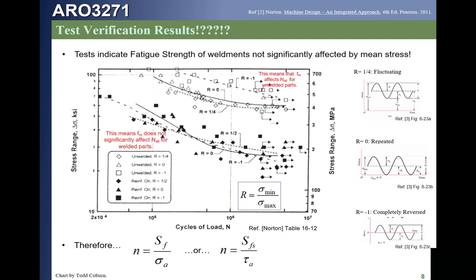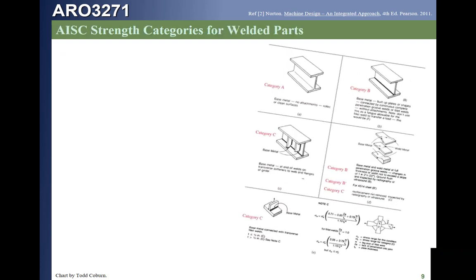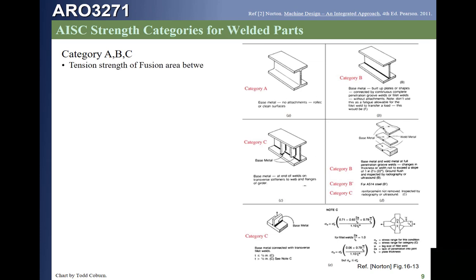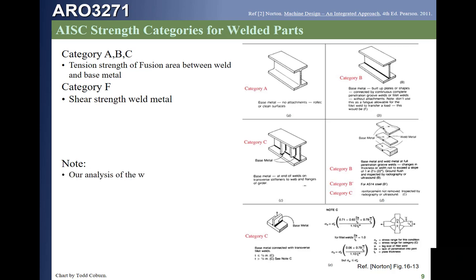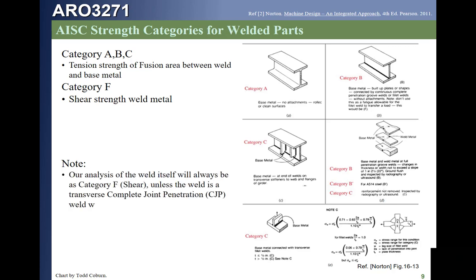We can write the factor of safety or margin of safety directly on fatigue strength. The weld code lays out many different parts and characterizes different types of welds. We're going to simplify by characterizing welds in two brackets: those where the weld experiences shear stress, and those where it experiences normal stresses.